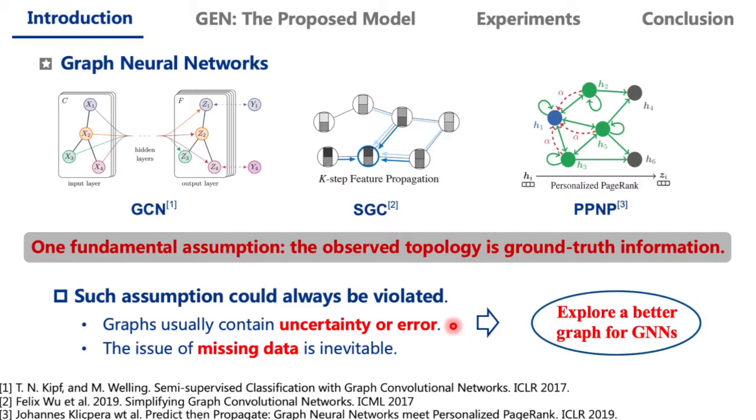It has been revealed that unreliable, error-prone graphs could significantly limit the performance of GNNs. For example, the performance can greatly degrade on distorted graphs. Therefore, it is imperative to explore a better graph for GNNs.